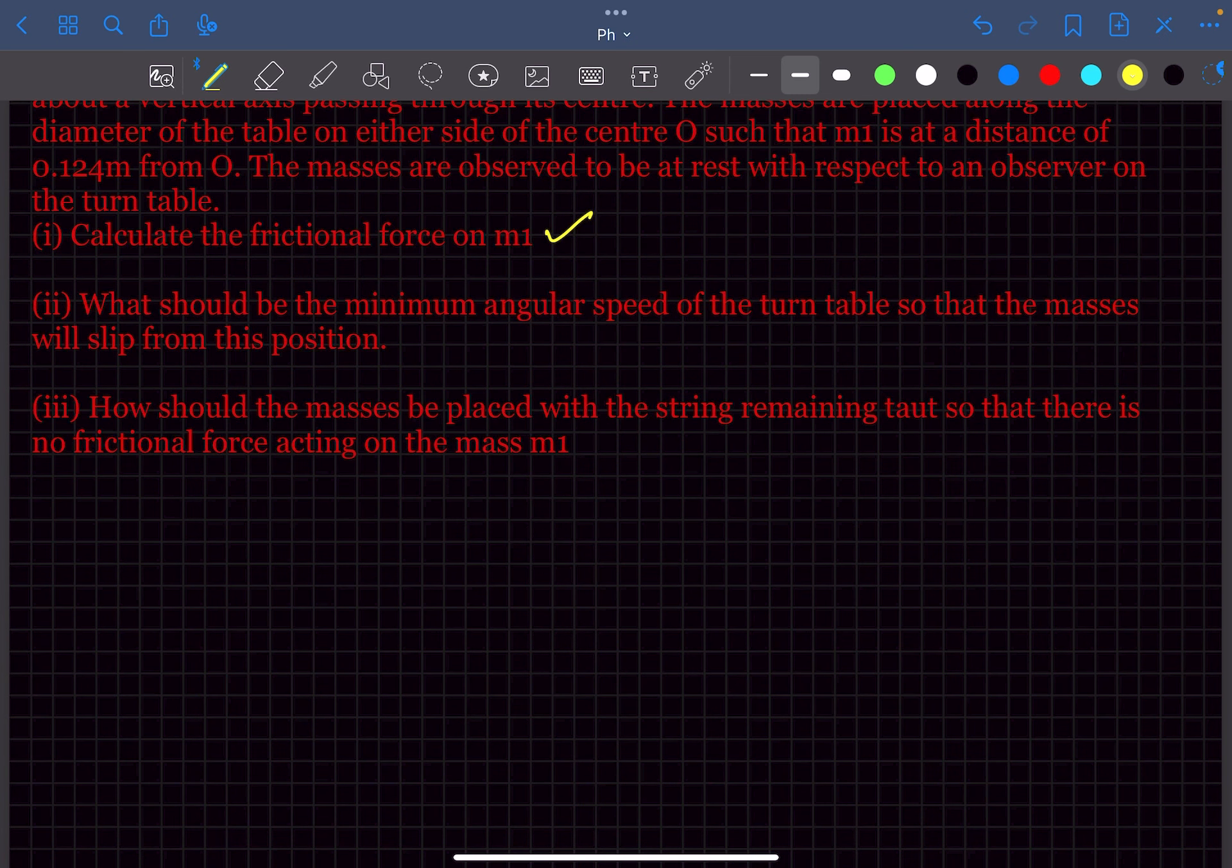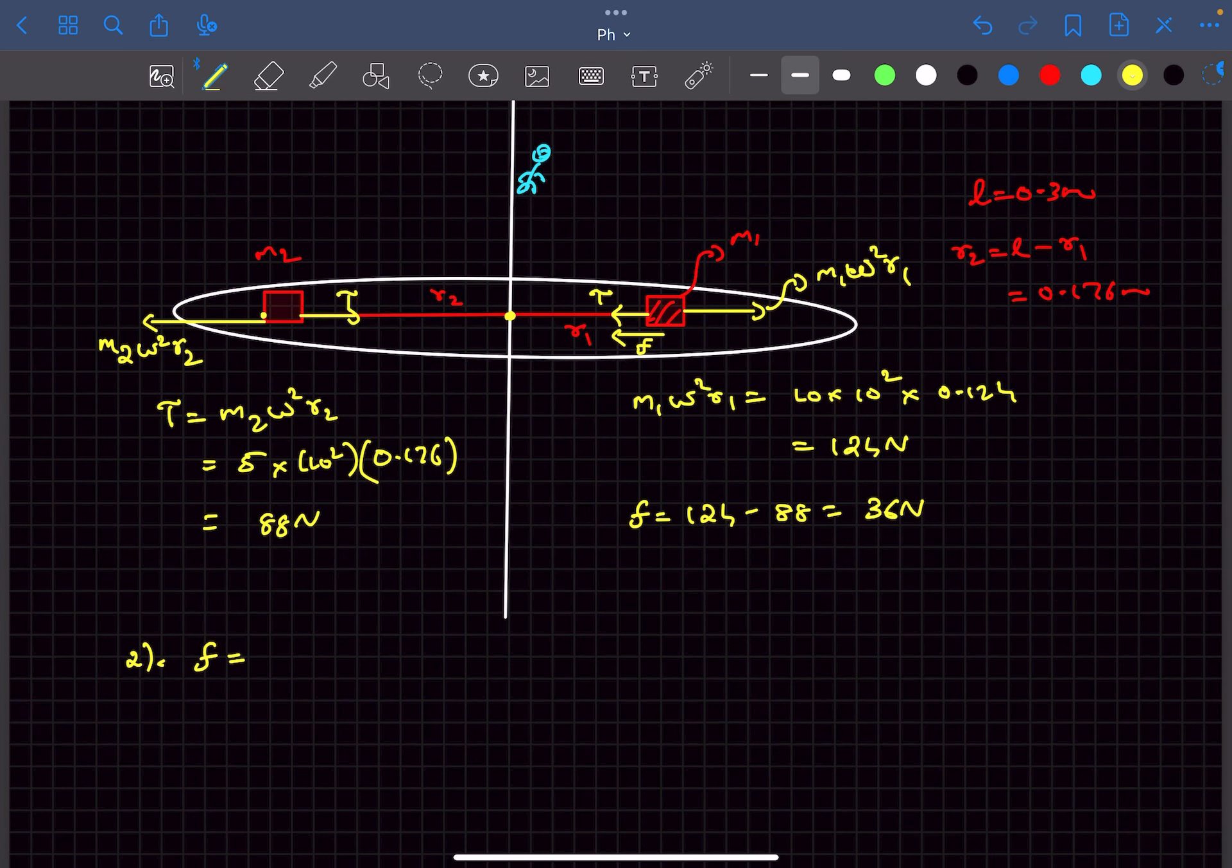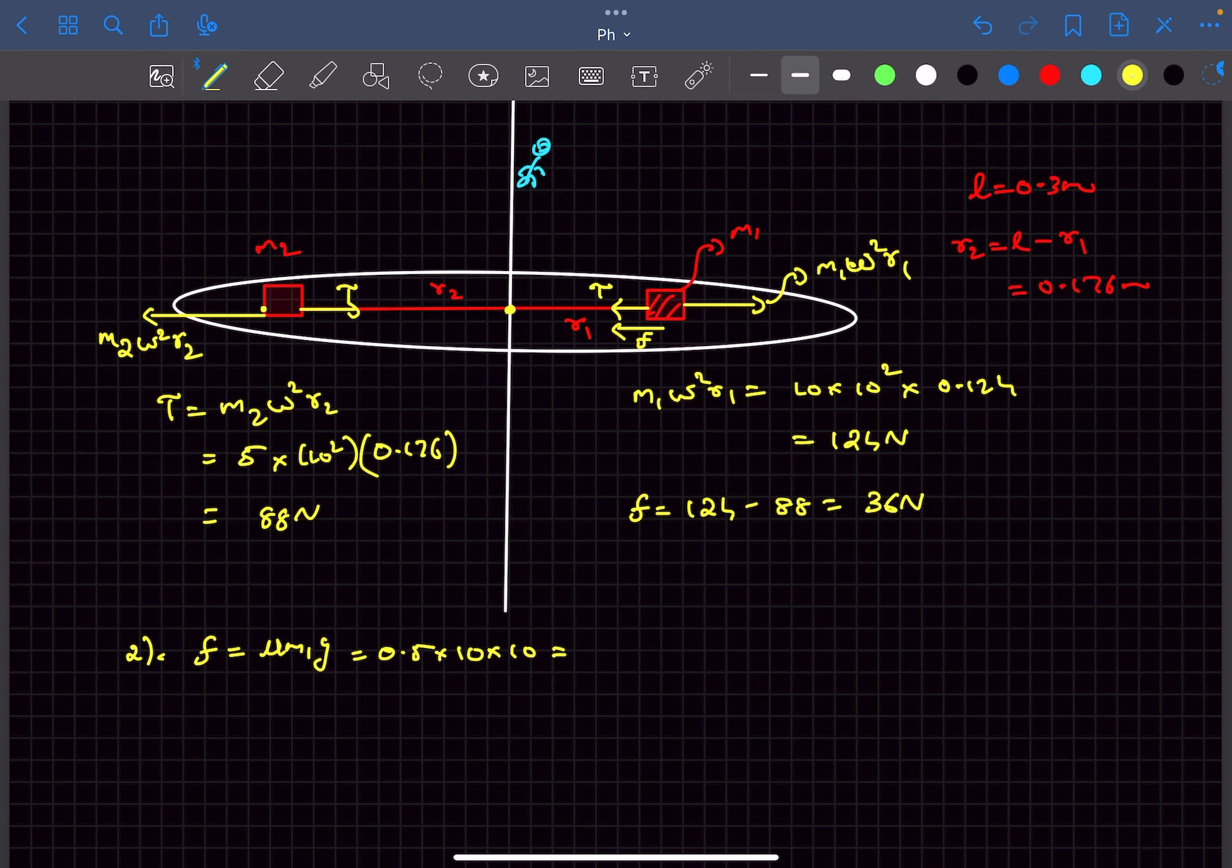Now question number two says what should be the minimum angular speed so that the masses will slip from this position. So as we keep on increasing the omega, you can see this centrifugal force will start to increase and there will be a point where this friction force will reach its limiting value after which if we raise the omega by even a little bit this block will start to slip towards the right side. The friction will approach the limiting value which is actually equal to mu m1 g, so this comes out to be 50 newtons. Moment before slipping the friction reaches a value of 50 newtons.